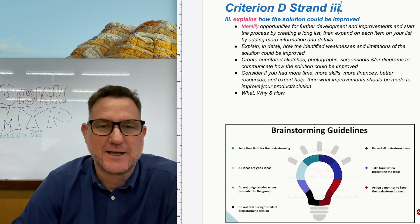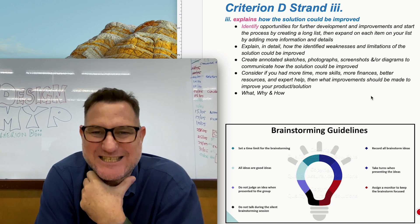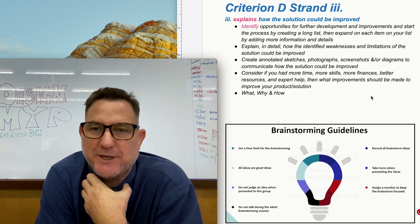Okay, so let's start with the assessment criteria line. It says here explains how the solution could be improved.